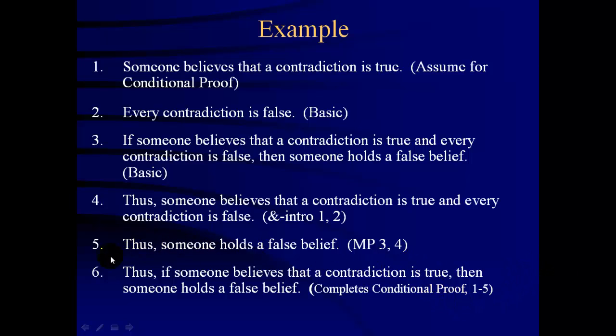So we've done it. We've proven this conditional here at 6. We assumed the antecedent, we introduced basic premises if we wanted to—and we did in this case. We used only valid inferences, and we guaranteed they were valid by properly using known named valid inference rules. And then we finished our extraction, our proof here, with the proper citation that cites all of the lines that began with the antecedent and ended with the consequent of the conditional proven.